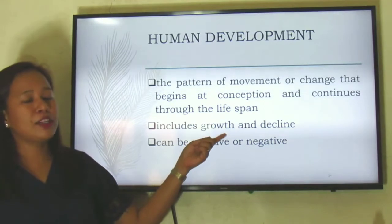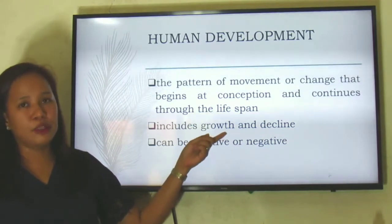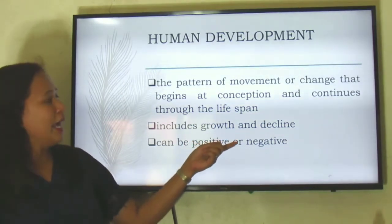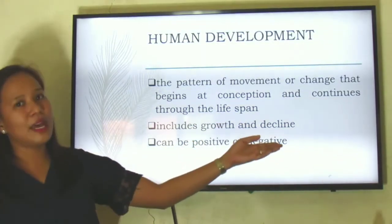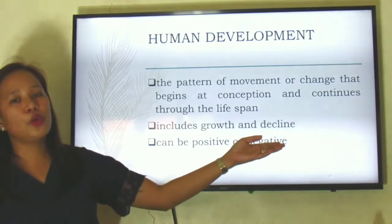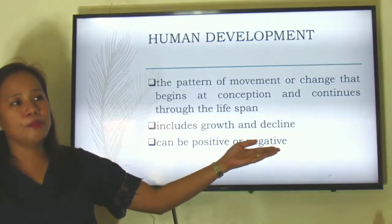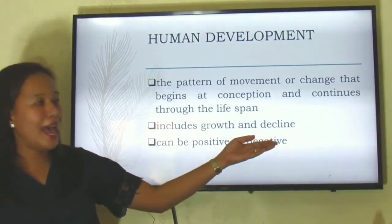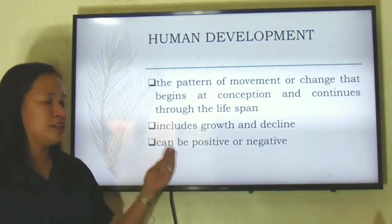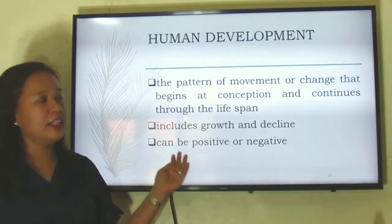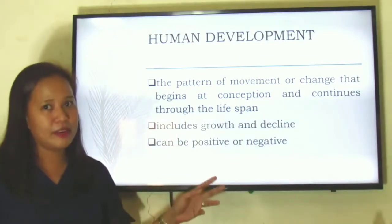Development is a lifelong process and it includes growth — that's why we mentioned the term evolution. And it also includes decline — that's why we have the term atrophy. It could be positive and it could be negative at the same time.